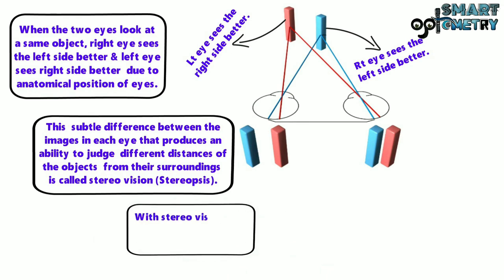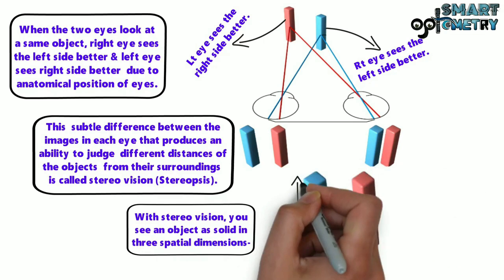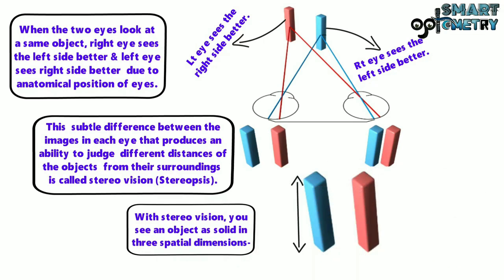With stereo vision, you can see an object as solid in three spatial dimensions. So it is possible to perceive the height, width, and depth of these objects.